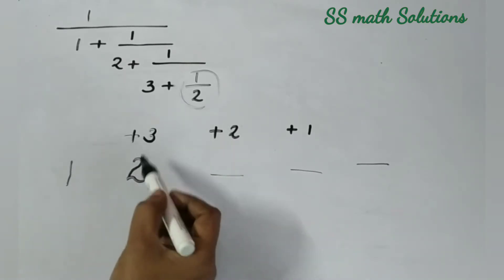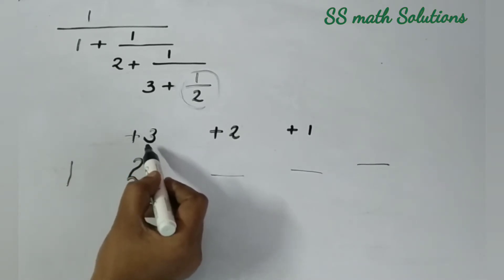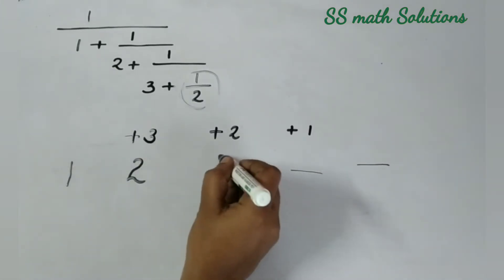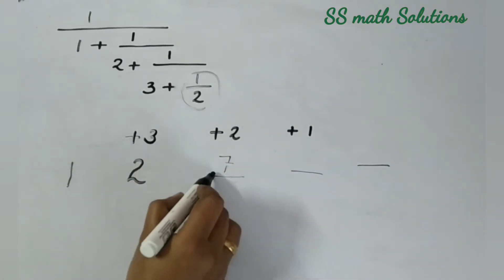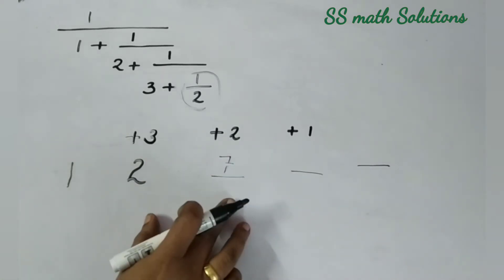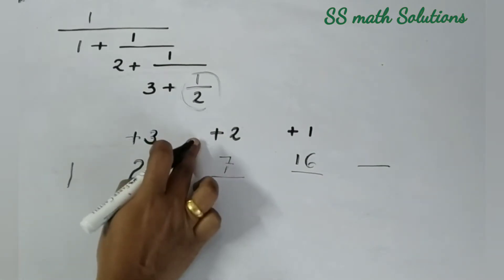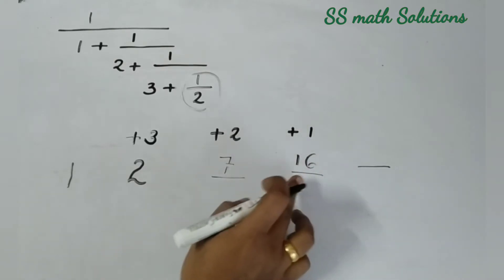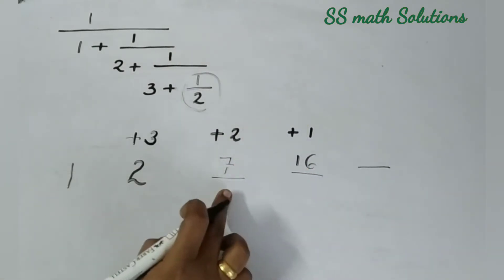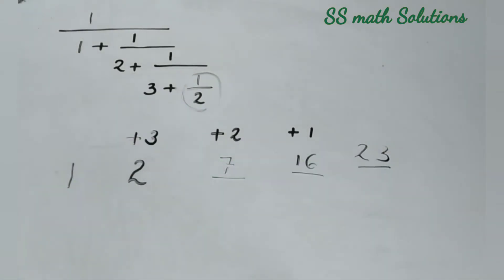Now for the arrangement, we multiply: 2 into 3 is 6, plus 1 plus 1 gives 7. Now 7 into 2 is 14, plus 2 is 16. Then 16 into 1 is 16, and 16 plus 7 is 23. So we got our answer: 23 by 16.